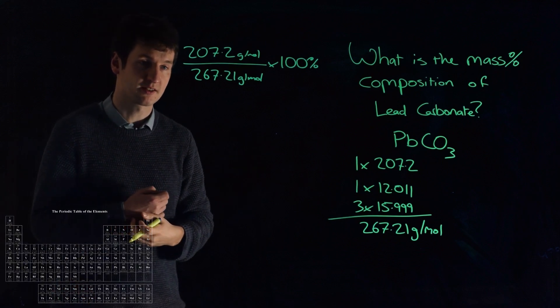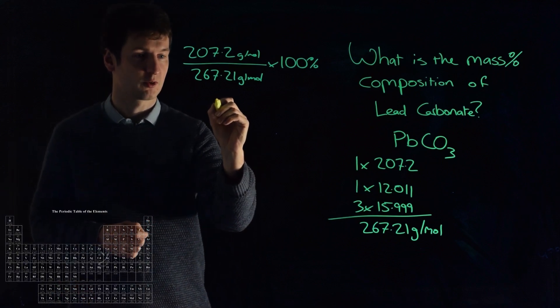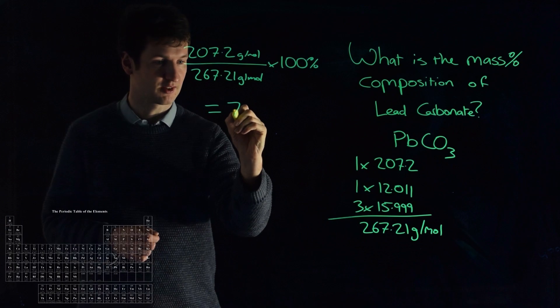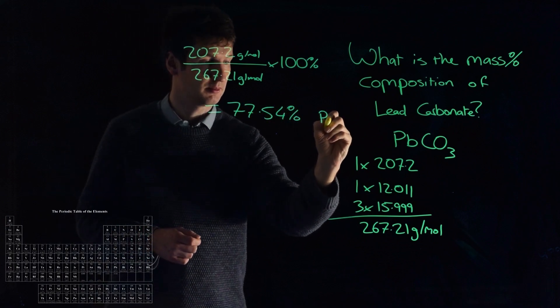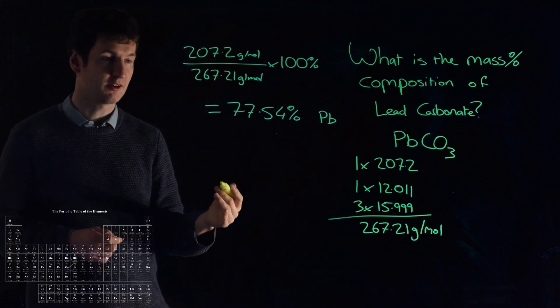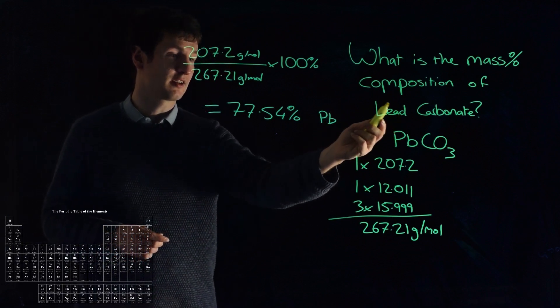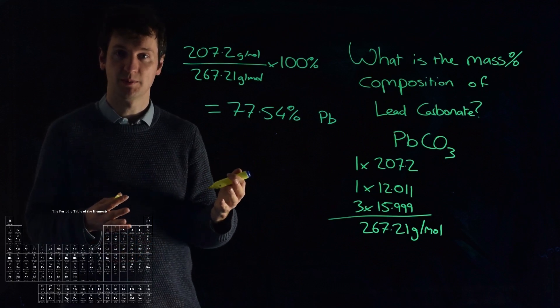So about three quarters of this, or just over three quarters, so that'll give us 77.54% Pb, or lead. So 77.54% of our lead carbonate is actually the element lead itself.